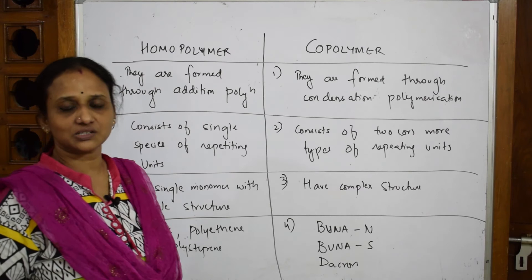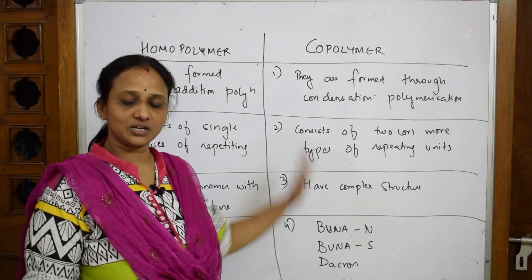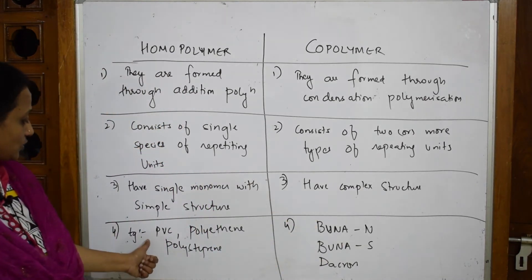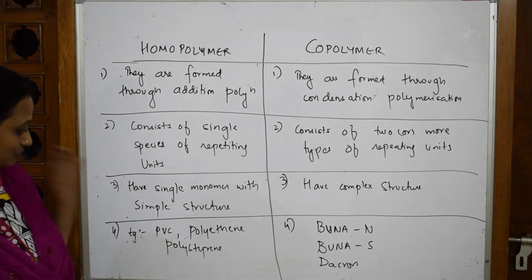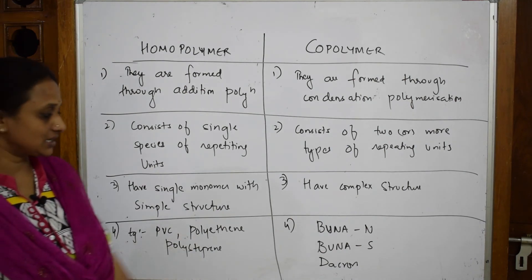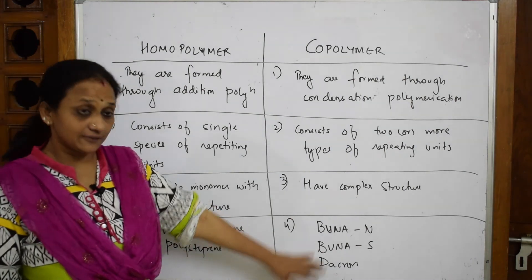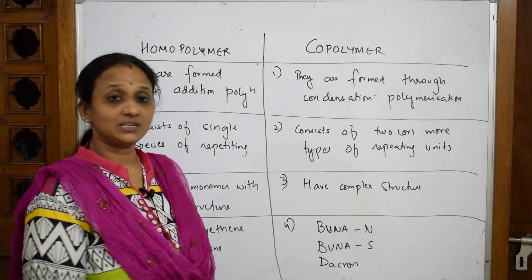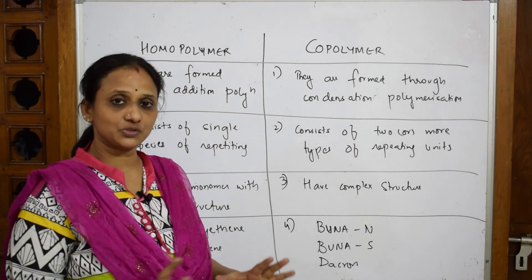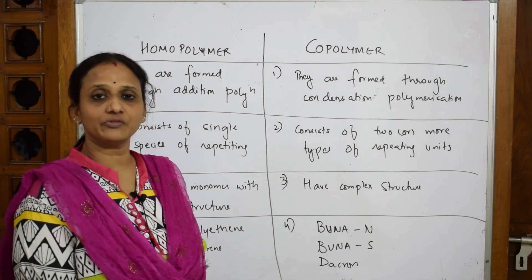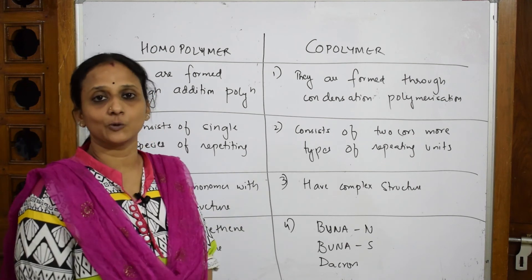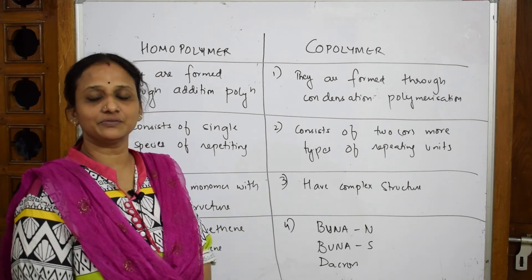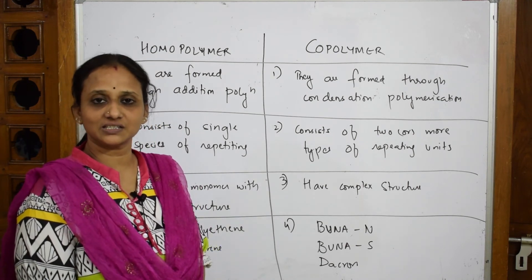Homopolymers have a simple structure while copolymers have a complex structure. Examples of homopolymers are PVC, polythene, and polystyrene. For copolymers, I've shown you examples of Buna, Buna-S, and Dacron. I've combined everything together in the form of a table — please study this. With this, the chapter is complete.